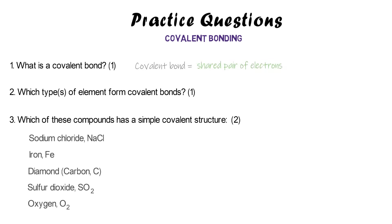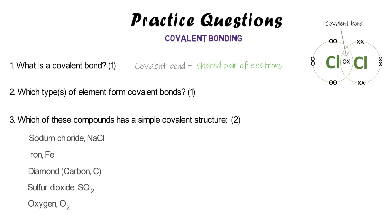A covalent bond is a shared pair of electrons — a pair of electrons shared between two atoms when their outer shells overlap, as shown in this diagram. In the diagram, the xo pair in the center of the two atoms is your covalent bond.